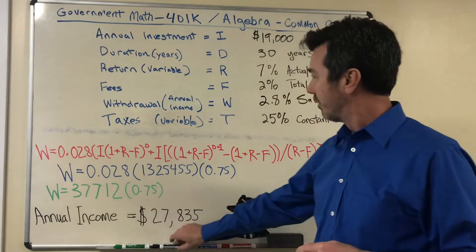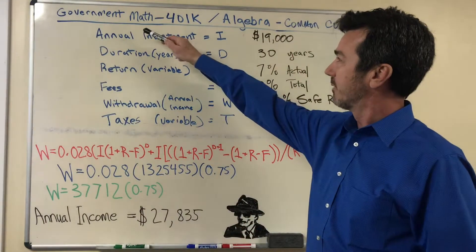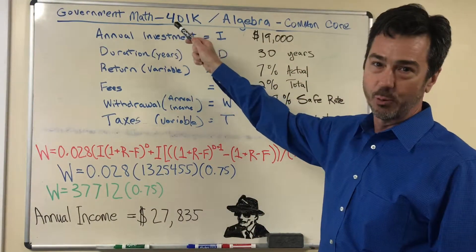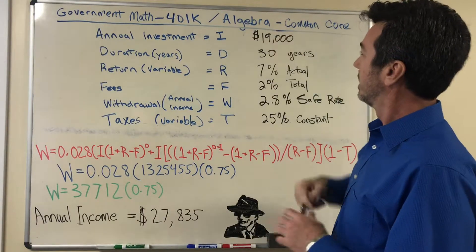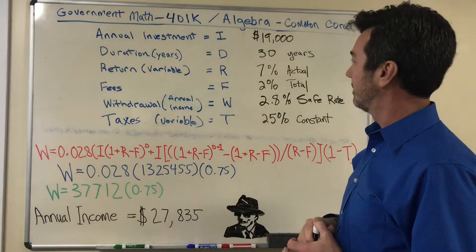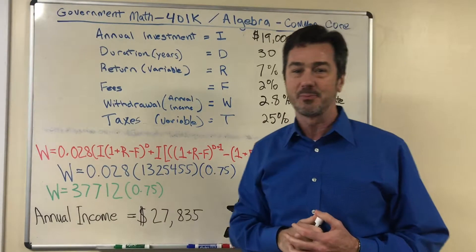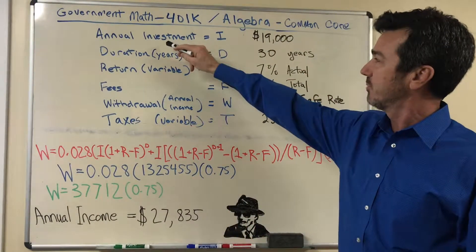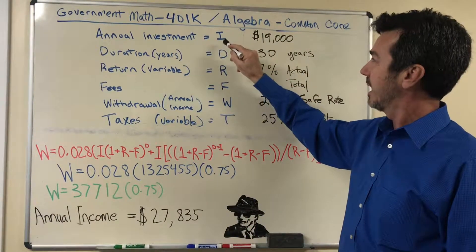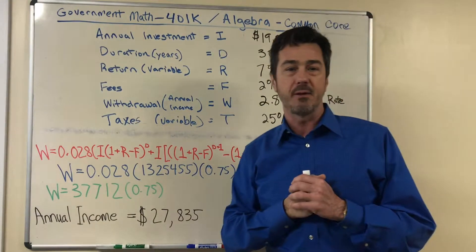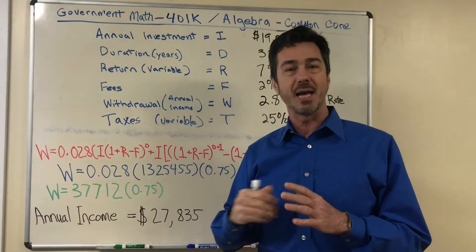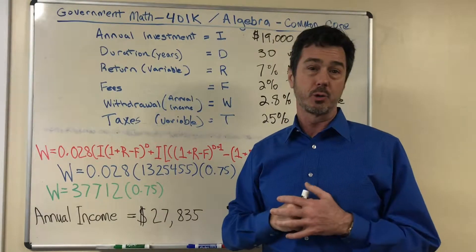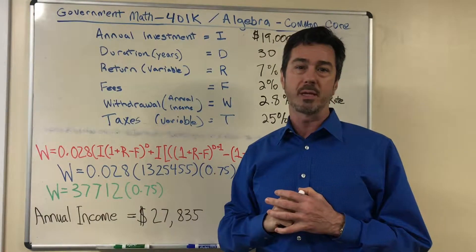So up on the board we're going to talk about government math which is your 401k and how it actually looks in an equation with algebra and maybe common core math. We have an annual investment which is I and in this case we have to use a fixed number so we're going to use $19,000 a year. That is the maximum amount that you can contribute now to a 401k plan.